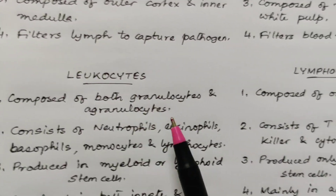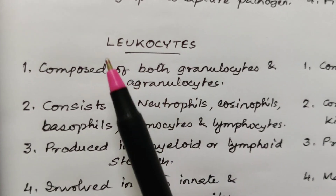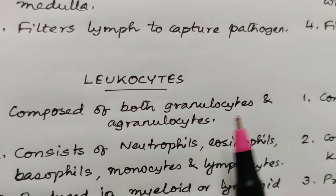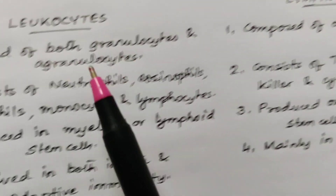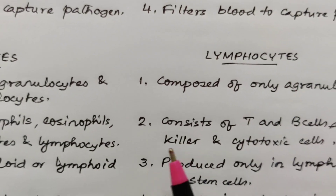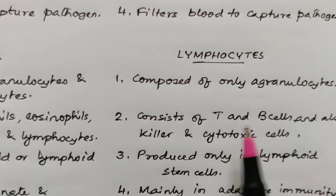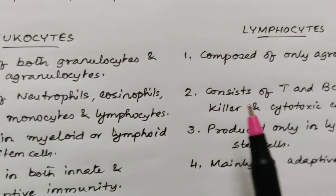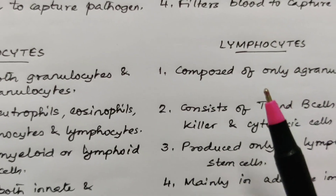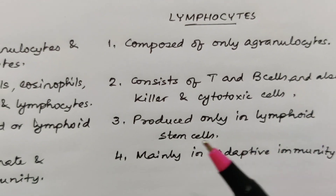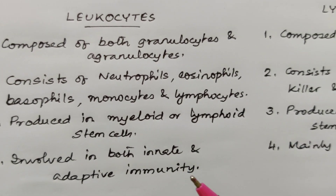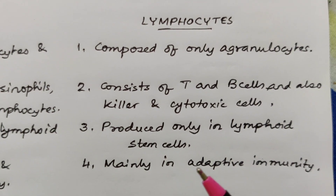Sixth comparison: leukocytes and lymphocytes. Leukocytes means all the different kinds of WBCs, whereas a lymphocyte is only one type of WBC. Leukocytes are composed of both granulocytes and agranulocytes, and consist of neutrophils, eosinophils, basophils, monocytes, and lymphocytes, whereas lymphocytes consist of T-cells, B-cells, killer cells, and cytotoxic cells. Leukocytes are produced in myeloid or lymphoid stem cells, whereas lymphocytes are produced only in lymphoid stem cells. Leukocytes are involved in both innate and adaptive immunity, whereas lymphocytes are mainly involved in adaptive immunity.